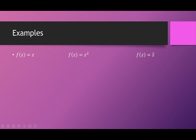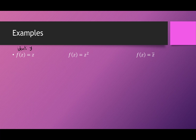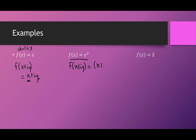Let's look at some examples. If we're dealing with the identity function F of Z equal to Z, and we make the substitution Z equals X plus iY, this just becomes X plus iY. Similarly, if we look at F of Z equal to Z squared, making that substitution gives us X plus iY squared, which simplifies to X squared minus Y squared plus i times 2XY. We have a function of X and Y.